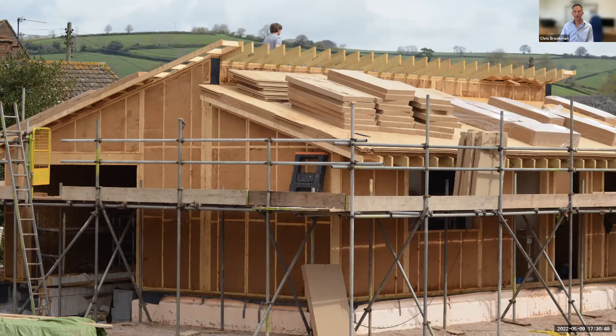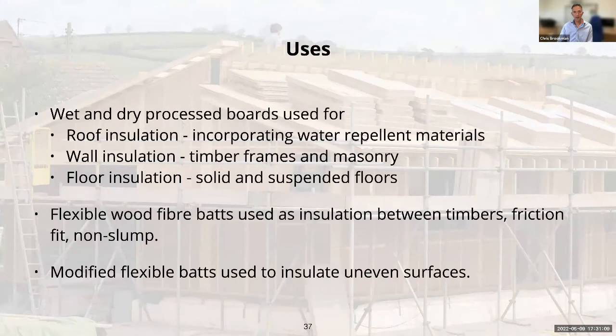On the roof you can see boards in a couple of different types — wet process, with a square edge board and then a tongue and groove board over the top. That's actually the building I'm sitting in at the moment — our office. The boards, whether wet or dry, are used for roof, wall or floor insulation. The flexible wood fibre is generally only used between timbers, giving a friction fit — it can be in floors, walls or roofs but is always between timbers.